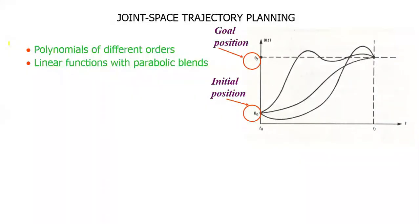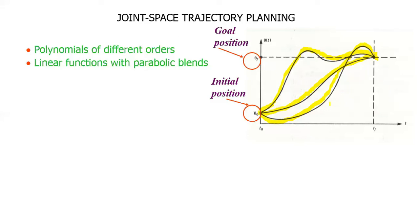Two approaches are reported in the literature for joint space trajectory planning: polynomials of different orders, and linear functions with parabolic blends. We will first discuss polynomials of different orders. Suppose we have two joint angles — initial and final — and we want to move the joint from this initial angle to this final angle. We can force the joint to follow different trajectories, each defined with different order polynomial spline functions.